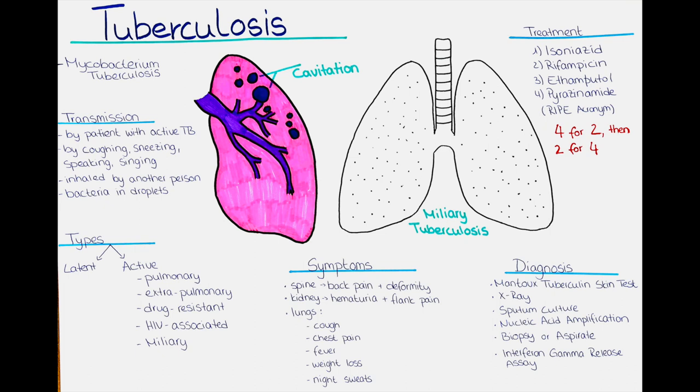Active tuberculosis disease is when the bacteria are actively growing and causing symptoms. It can affect the lungs as well as other parts of the body. Active tuberculosis disease can be further classified into several types. Pulmonary tuberculosis is the most common type and affects the lungs. Symptoms may include a persistent cough, chest pain, fever, and weight loss.